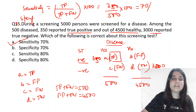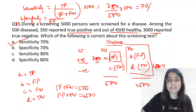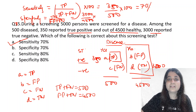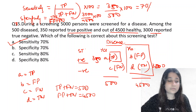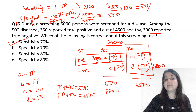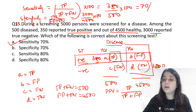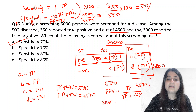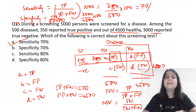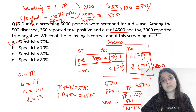Specificity is the ability of a screening test to correctly identify all those who do not have the disease. Specificity = TN divided by (FP + TN) × 100 = 3000 divided by 4500 × 100 ≈ 66.7%. Positive predictive value: out of all test-positive (TP + FP), how many truly have the disease — TP. Negative predictive value: out of all test-negative (TN + FN), how many truly do not have disease — TN. Always remember: disease on the column side, test on the row side.